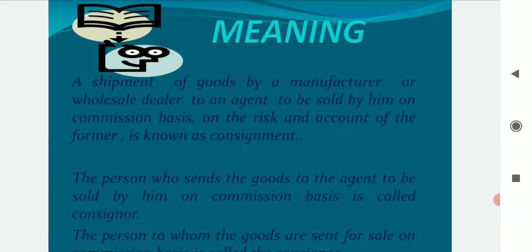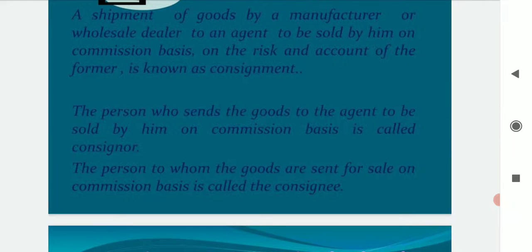Meaning of Consignment: A shipment of goods by a manufacturer or wholesale dealer to an agent, to be sold by him on commission basis at the risk and account of the former, is known as consignment. The person who sends the goods to the agent to be sold on commission basis is called the consignor. The person to whom the goods are sent for sale on commission basis is called the consignee. Consignment is an agency agreement under which a manufacturer or a wholesaler sends his goods at his own risk to an agent in a different place for the purpose of sale. The person sending or forwarding goods for sale is known as consignor or principal.